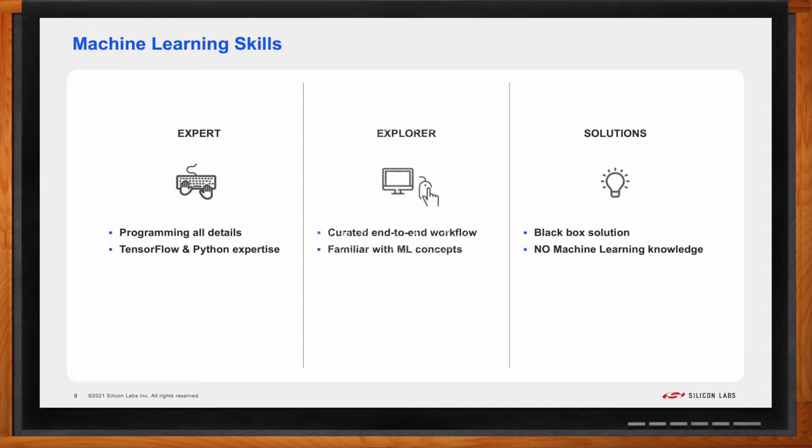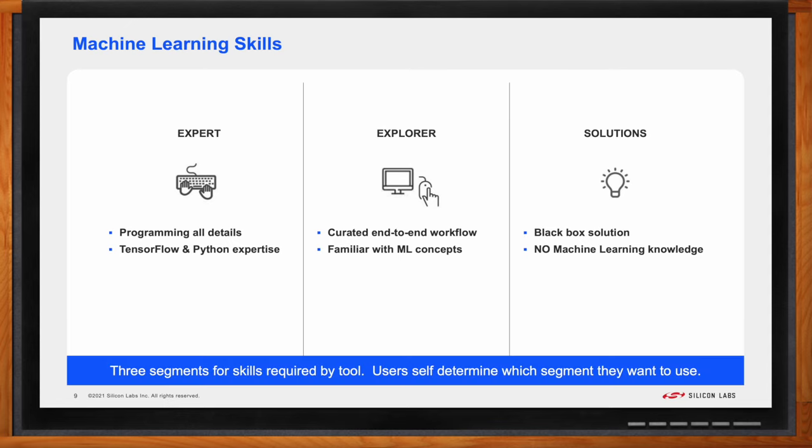In the middle, we call it the machine learning explorer. The skills expected here are to know the basic machine learning concepts and workflow, like we just discussed, but with a curated approach that steps the developer through all the steps needed to implement machine learning as a feature in their product. By segmenting tools into these simple categories, this allows a developer to understand what skills are expected of them in order to use the tool effectively. You can still have someone who qualifies as an expert use a solutions tool. This categorization just helps the developer understand what's expected of them.